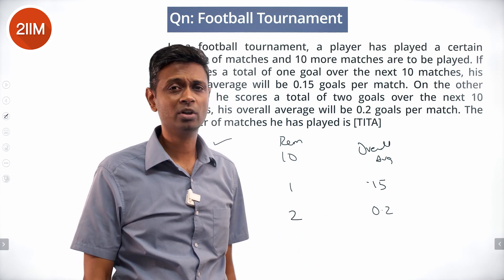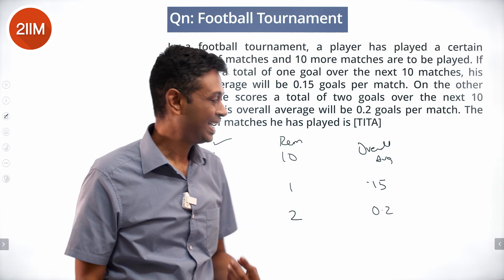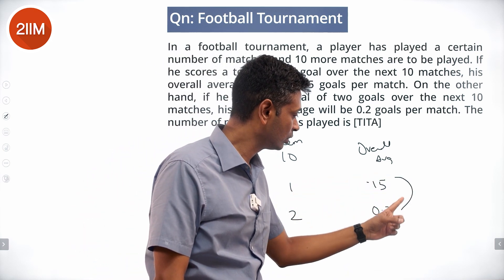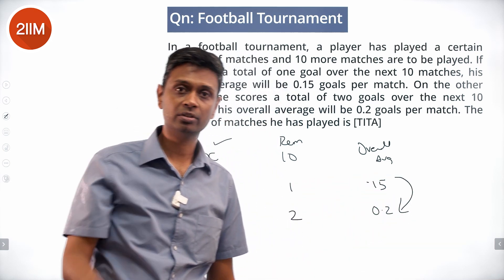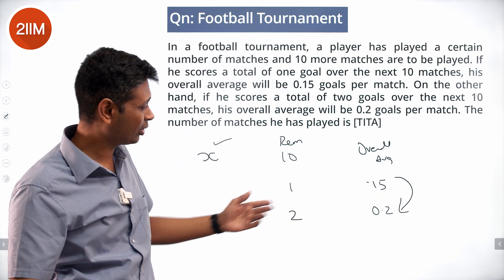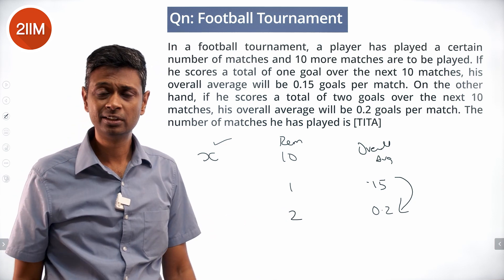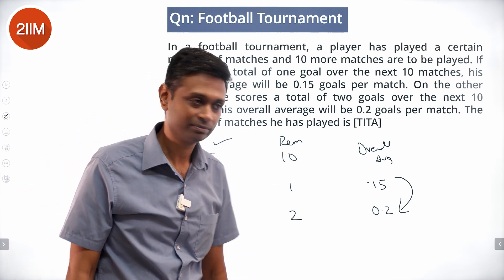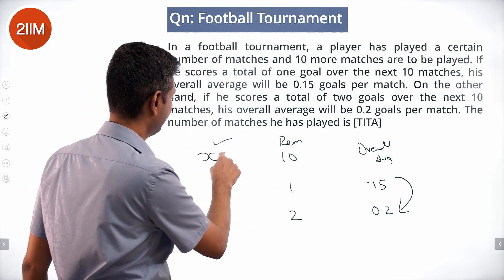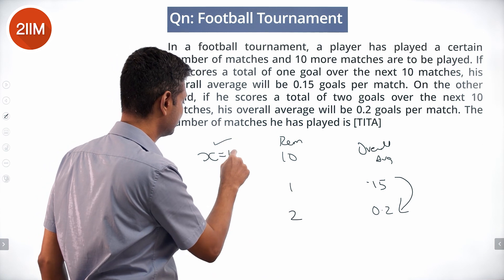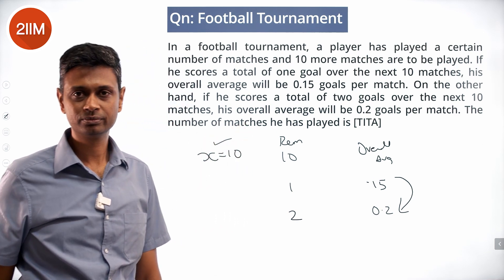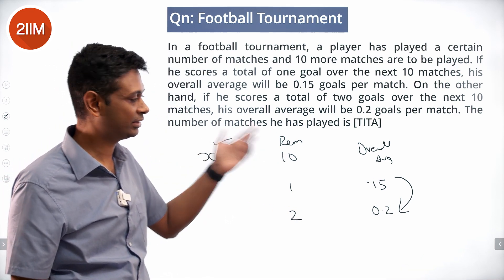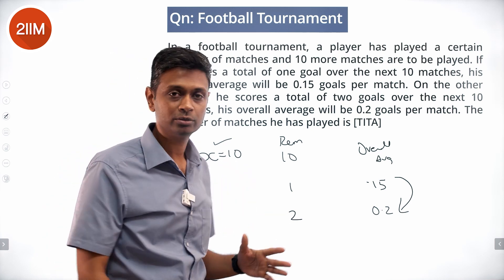The total number of matches is 20. If X is 10, then 10 plus 10 gives us 20 total matches, and we are through. X is 10.